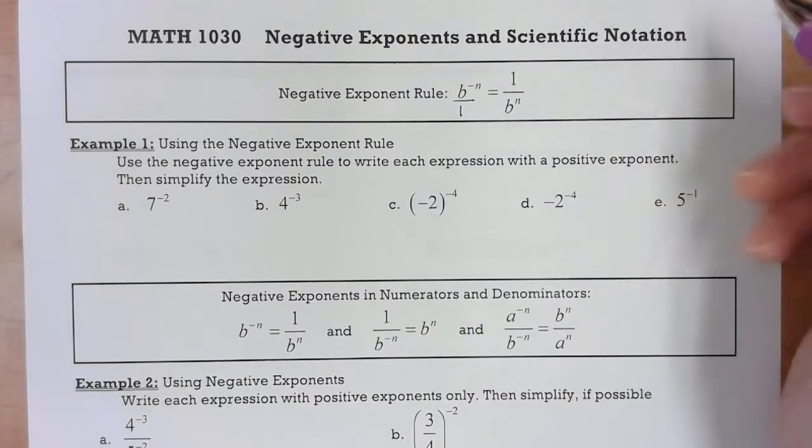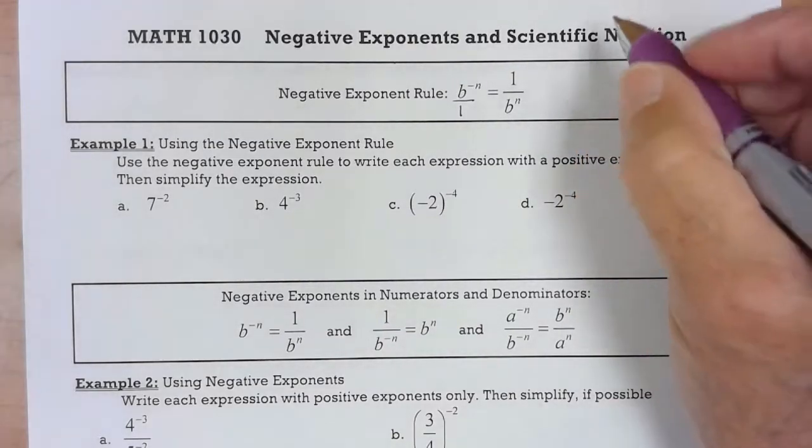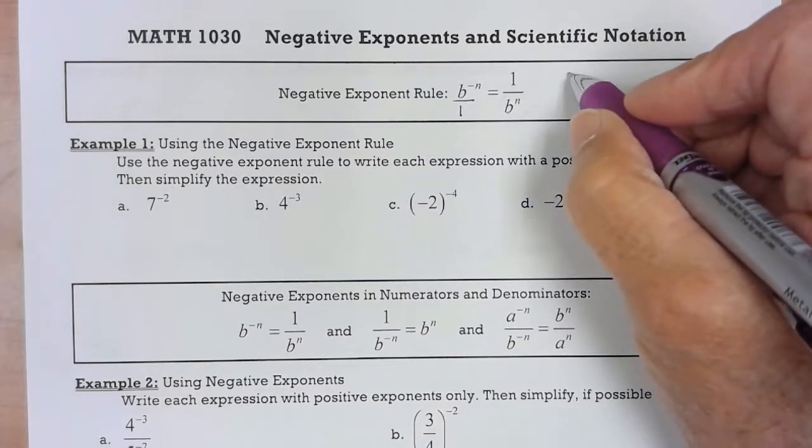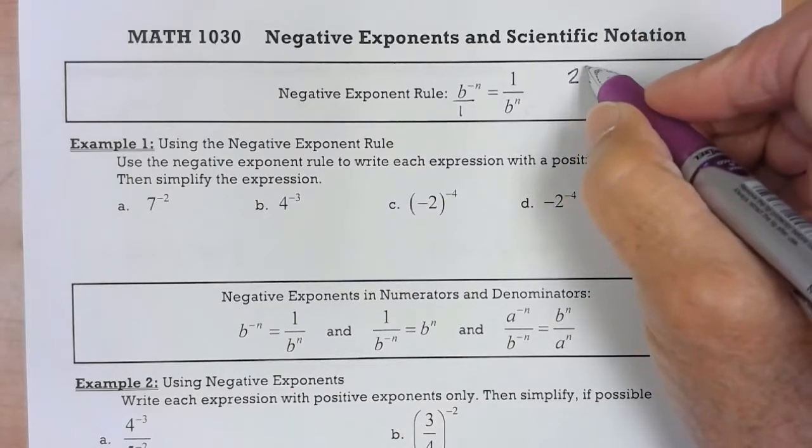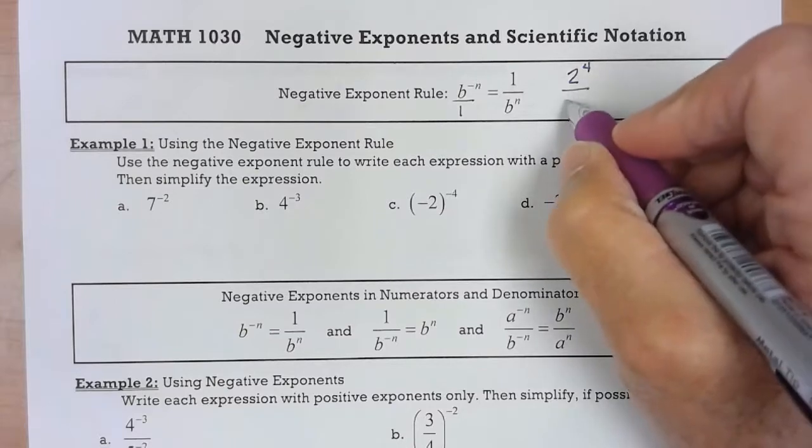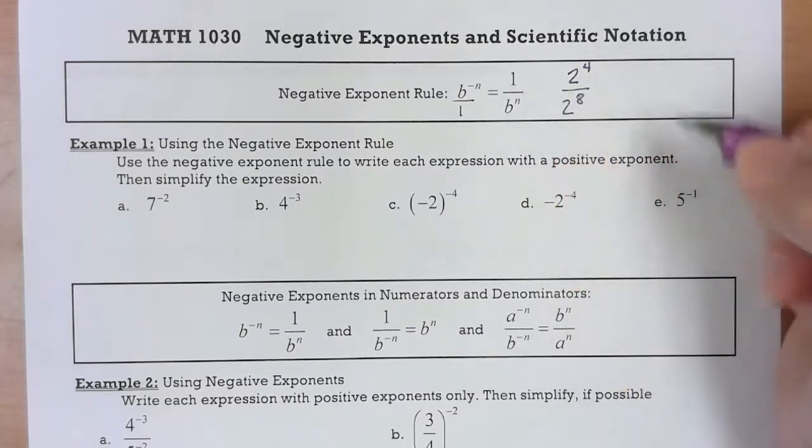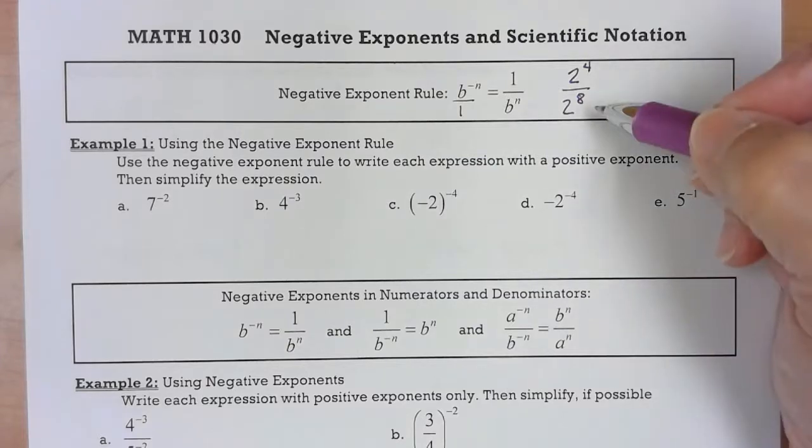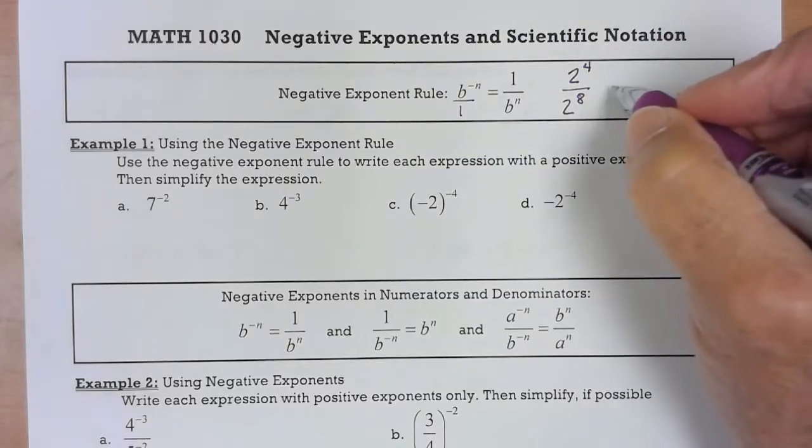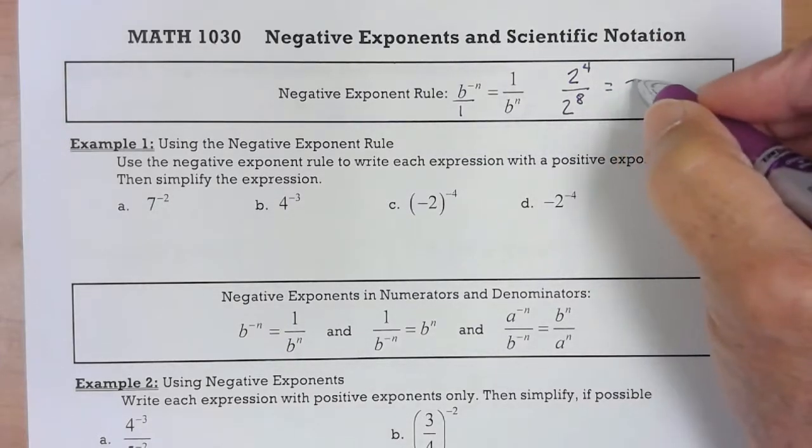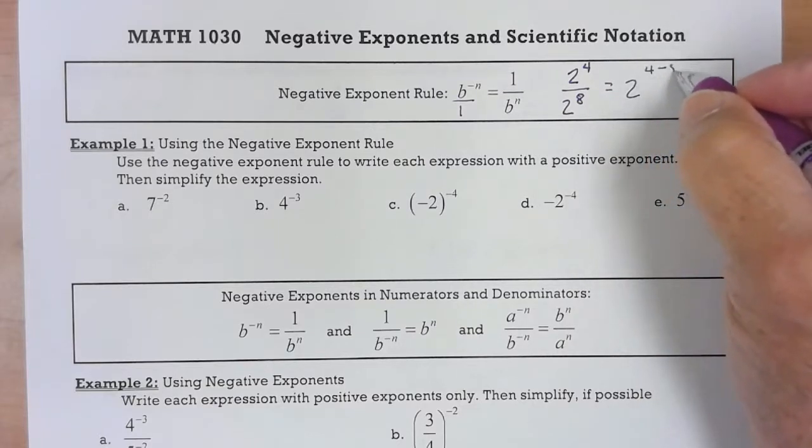For instance, let me give you an example. Say I had 2 to the 4th over 2 to the 8th. In the last section we knew that we could subtract, but now if I subtract this like it said in the last section I'd subtract going up.